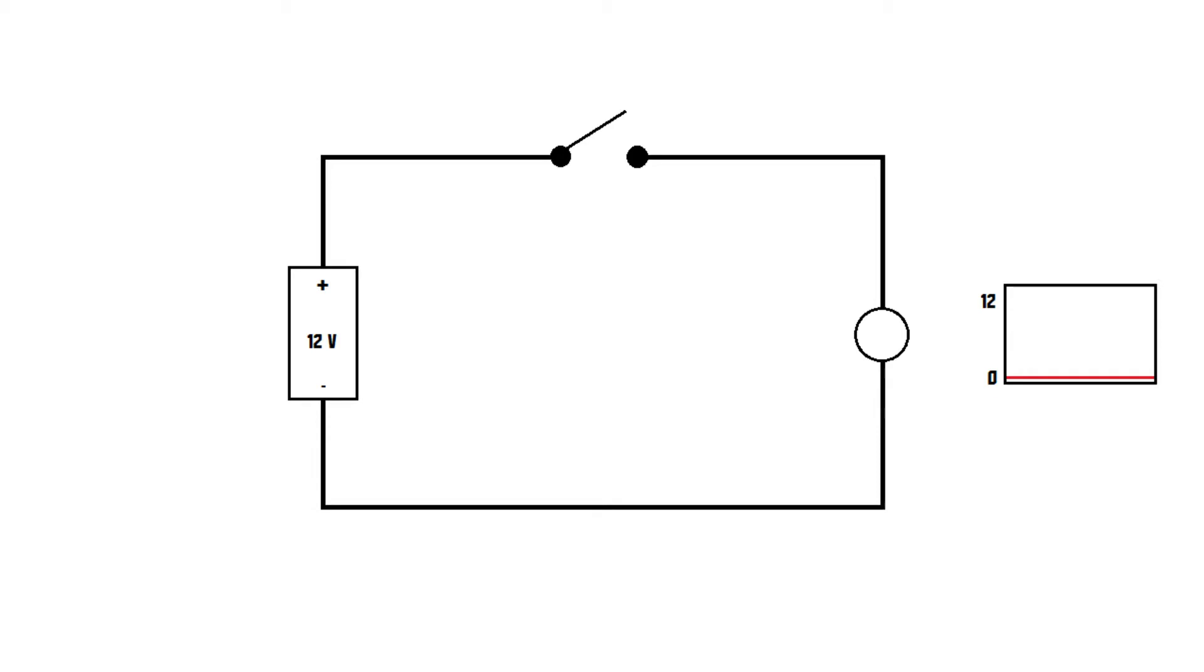Now being able to turn a light bulb on and off is great, but we want to be able to control the brightness of the light bulb, not just full power and off. The traditional way of doing this is by using resistors.